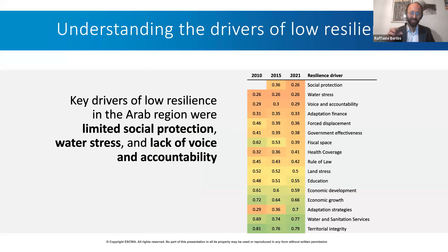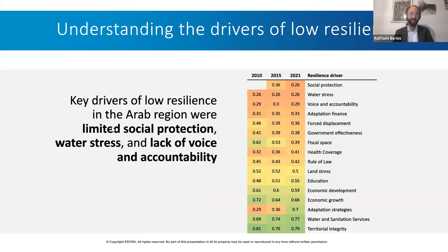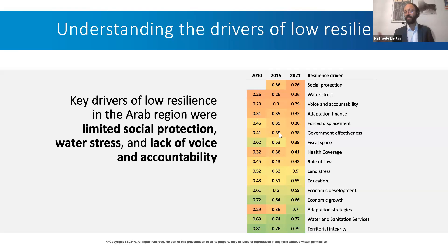Looking now at indicators on the resilience side — the lower the indicator, the higher the risk. Among the top drivers of risk from the lack of resilience side are the limited presence or development of social protection schemes, the issue of water stress, and the lack of voice and accountability. There are also other important cross-cutting indicators regardless of the risk domain.